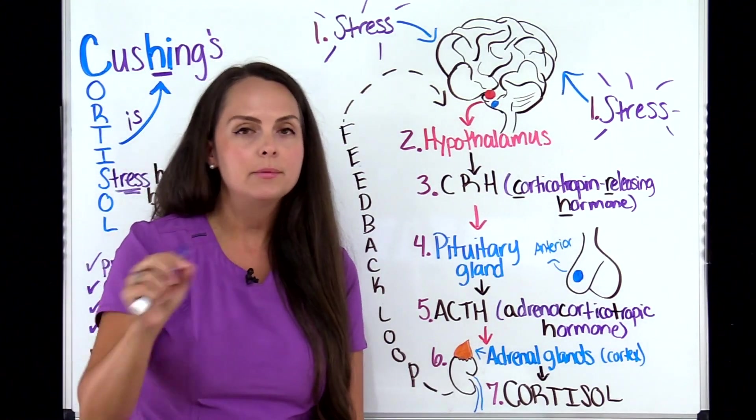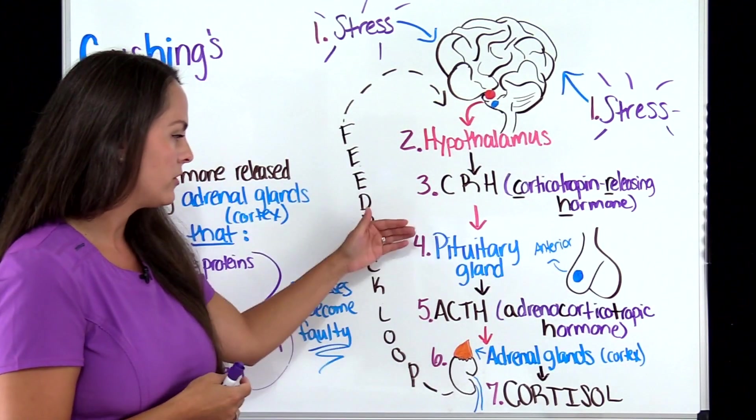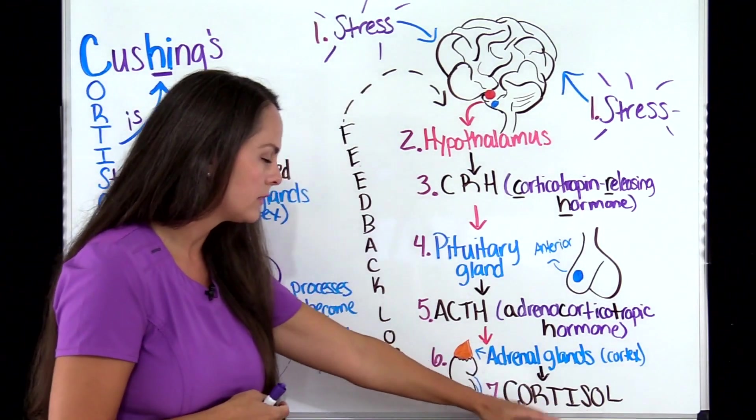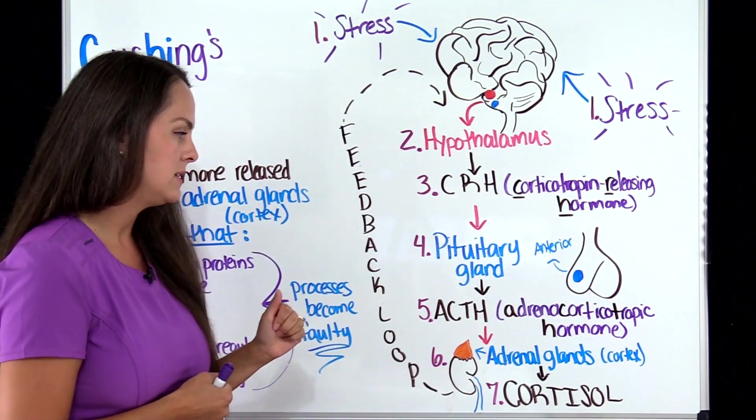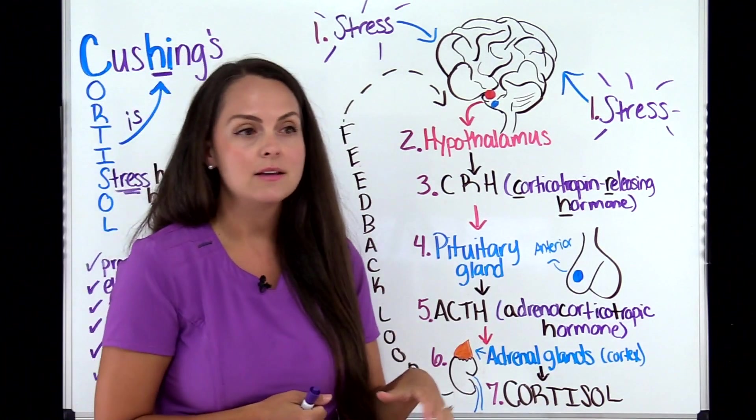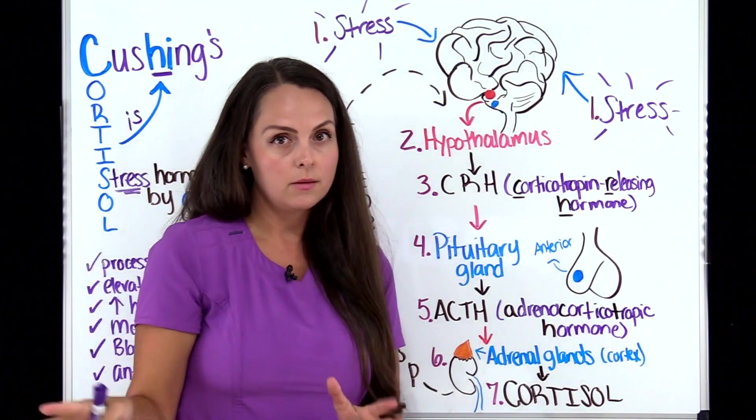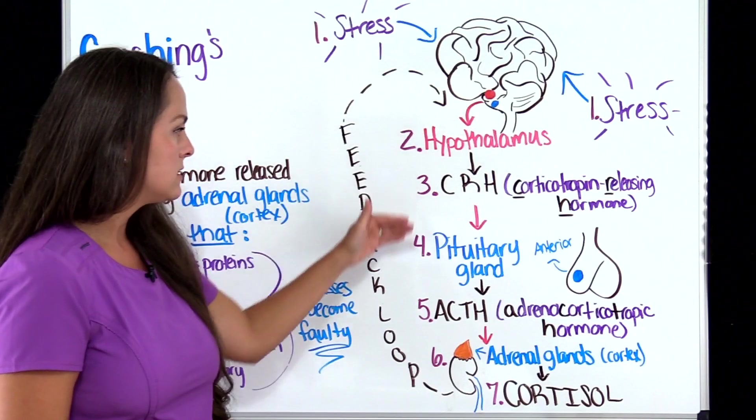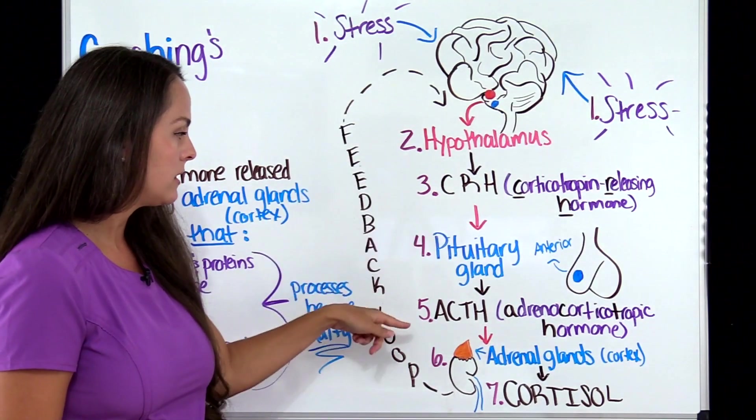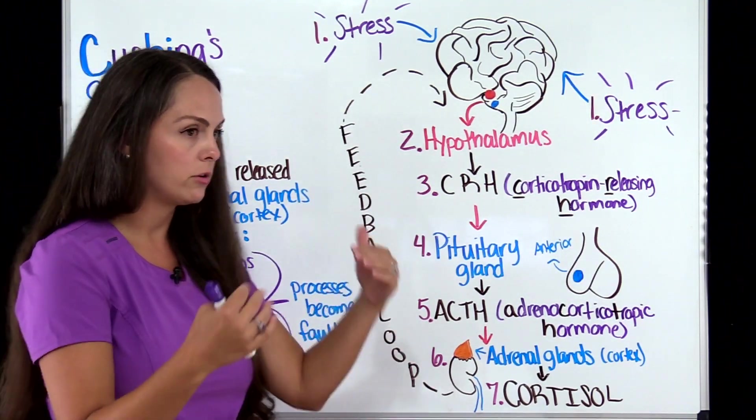And whenever that happens with lab work, typically what you're going to see is that you're going to have high cortisol, but low ACTH. And the reason for that is because the body senses, hey, we have too much cortisol in the body. So we're going to shut these down, particularly the pituitary gland from releasing this ACTH. So it drops it.